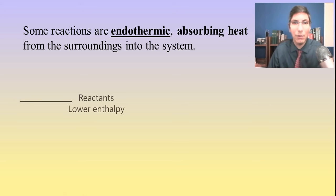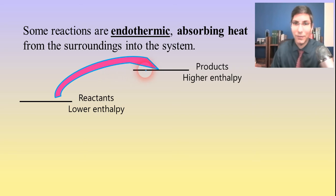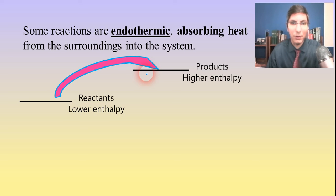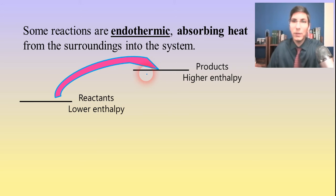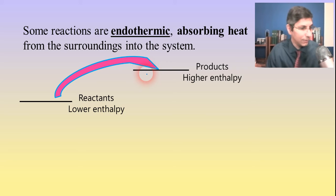There are some reactions that are endothermic — they absorb heat from the surroundings into the system. That means reactants start at a lower enthalpy state and products end up at a higher enthalpy state. Generally speaking, that's not how things work in the universe. For example, if I take a rock and set it on the edge of a table, it won't take much for that rock to end up on the ground — and if I come back later and find it there, I won't be surprised.